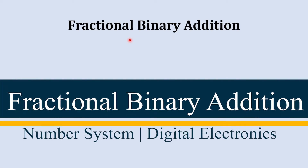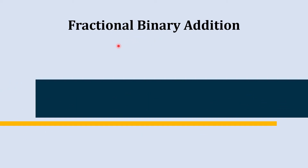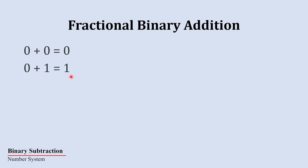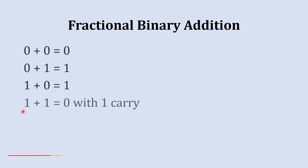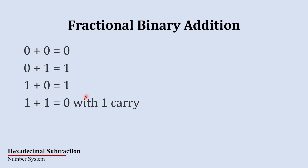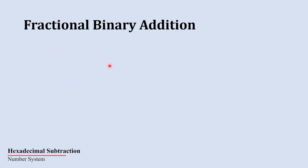In this video we are going to learn how to add two layers and three layers of fraction binary numbers. In our previous video we have seen how to add two binary digits: 0 plus 0 gives 0, 0 plus 1 gives 1, 1 plus 0 gives 1, and 1 plus 1 gives 0 as sum and 1 as carry. That logic was explained in detail in the previous video.